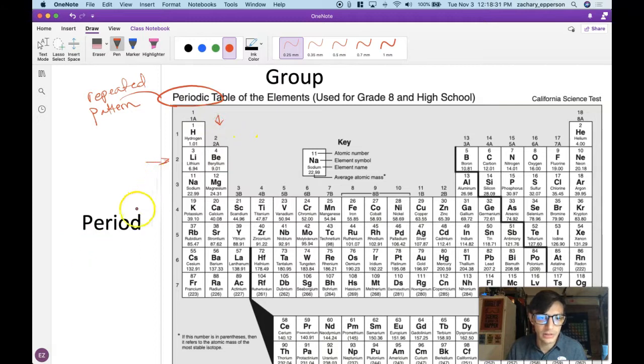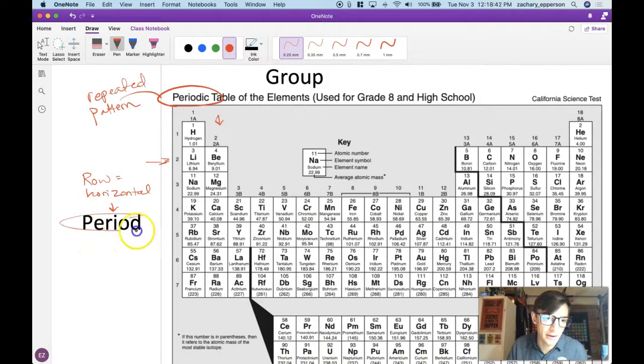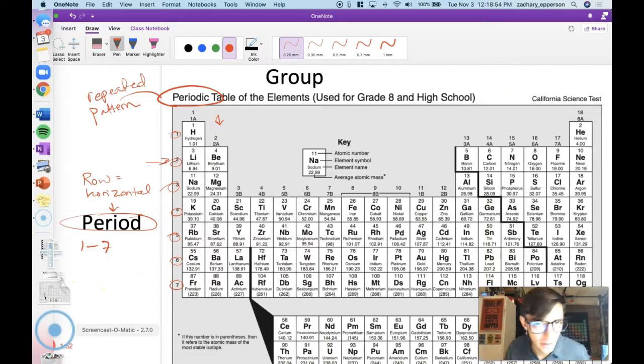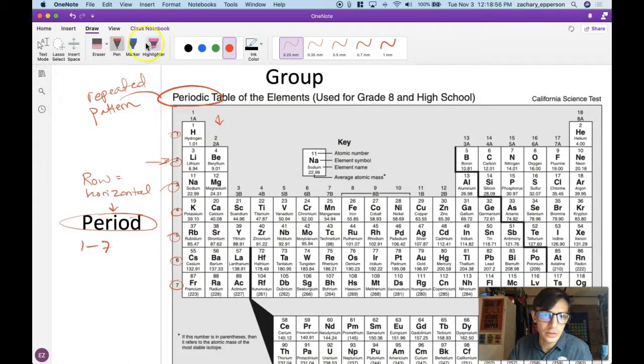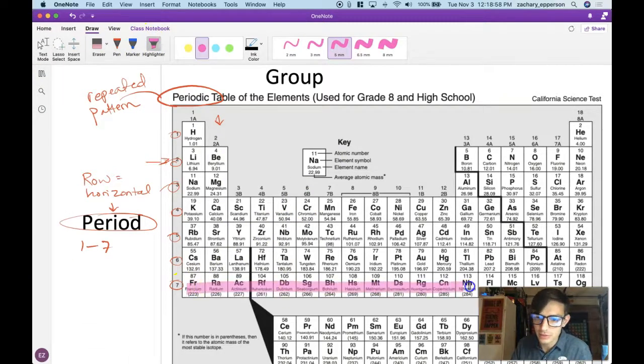A row is always going to be horizontal. And we would call a horizontal row a period in the periodic table. There are seven of them, one through seven. And here they are on the side. This will help you understand where something is. If I say look for an element in period seven, you would know to look at everything in this row.